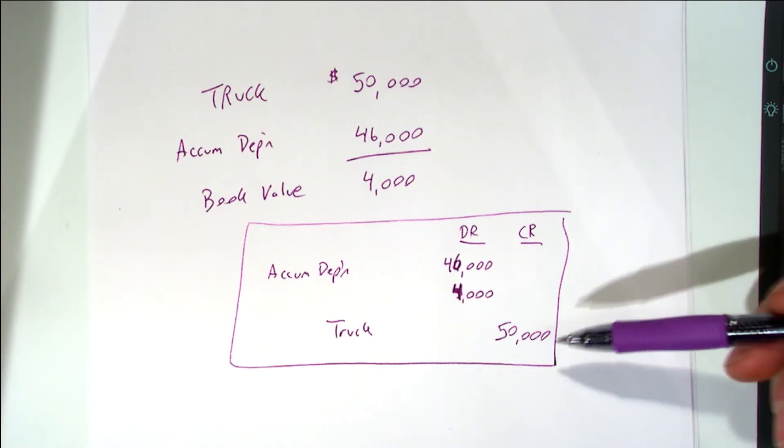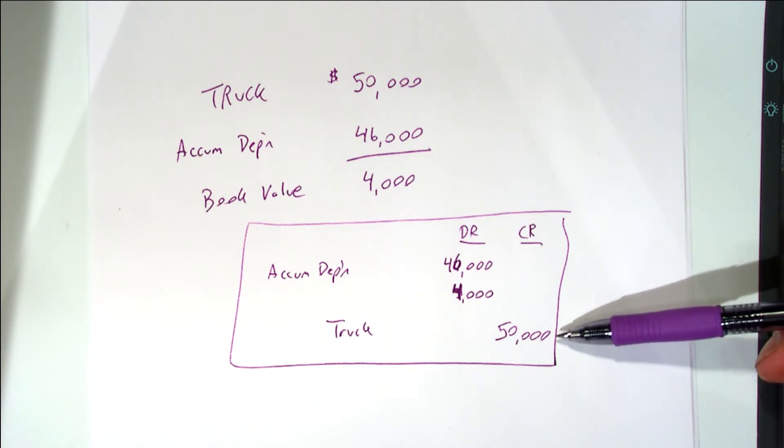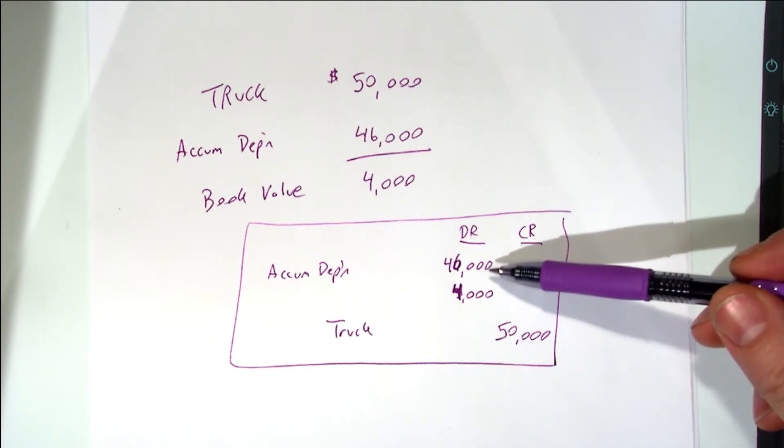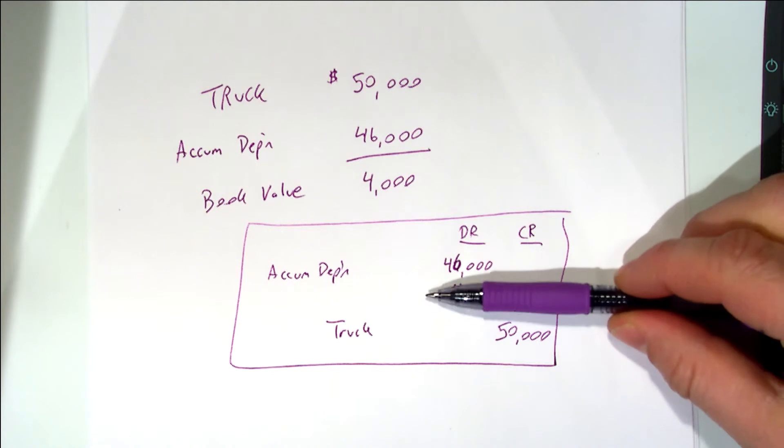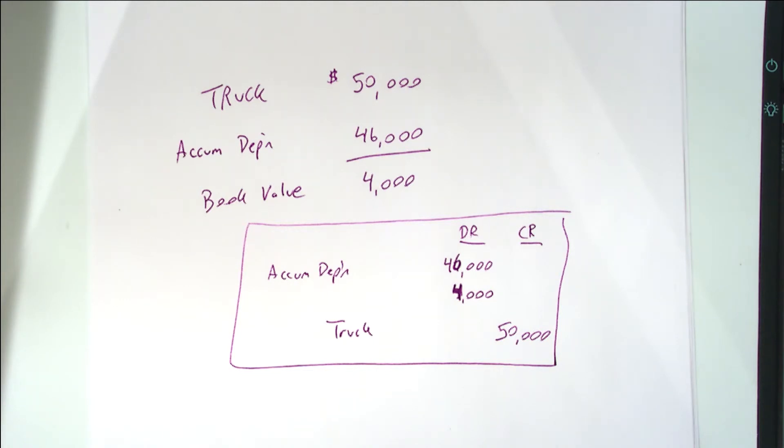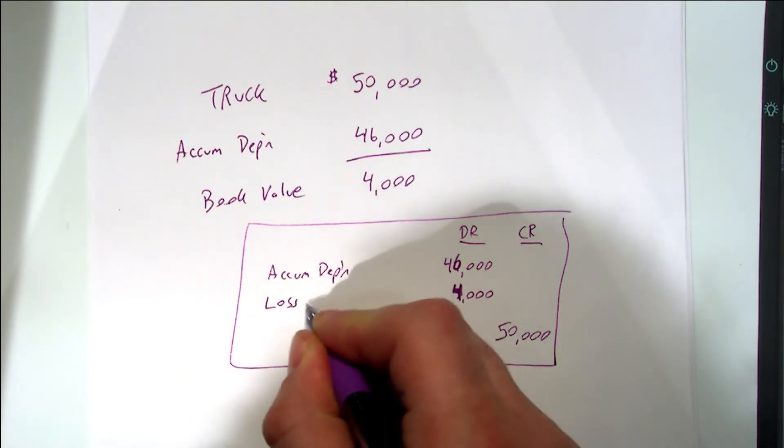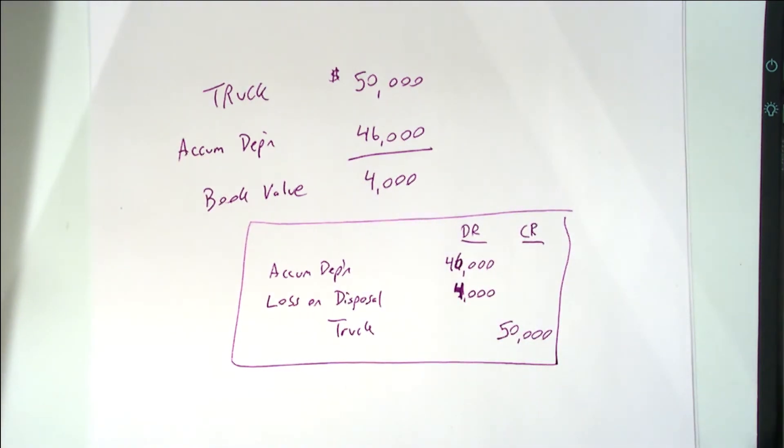So what is the journal entry that we have to do to take this truck off the books? Well we have to credit truck for fifty thousand. Right? We have to debit accumulated depreciation for forty six thousand. Right? Well that journal entry by itself does not balance. Right? So what do we debit for four thousand? Loss. On. Disposal. Well I told you that whole story. Was there any cash that outflowed in that story?